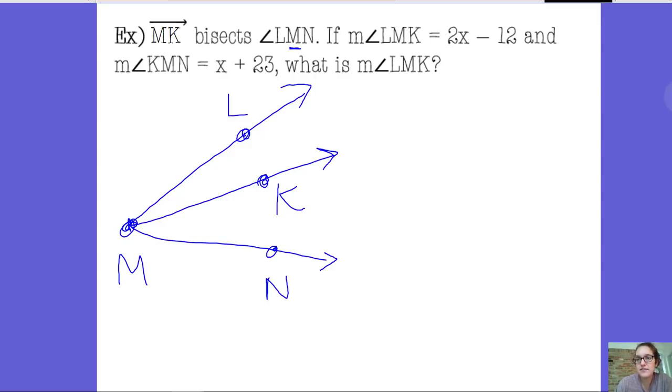It tells us in the problem then that the measure of angle LMK is 2X minus 12, and that the measure of angle KMN is X plus 23. What is the measure of angle LMK, the whole enchilada?